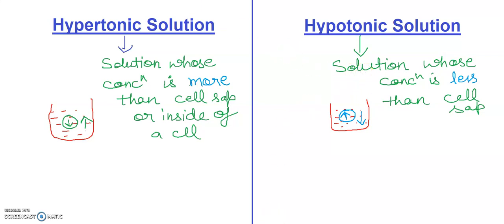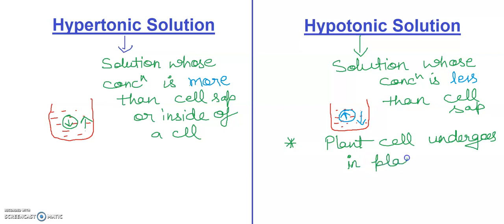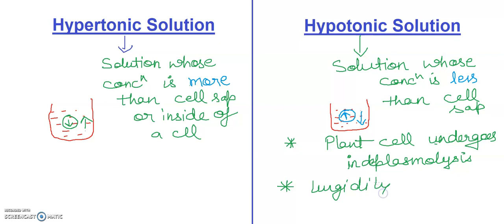Now the second point: if we want to discuss what happens to the plant cell — in a hypertonic solution, the plant cell undergoes plasmolysis. And in a hypotonic solution, the cell becomes turgid. So in hypotonic conditions, D-plasmolysis occurs and turgidity is achieved. In hypertonic solutions, plasmolysis occurs.